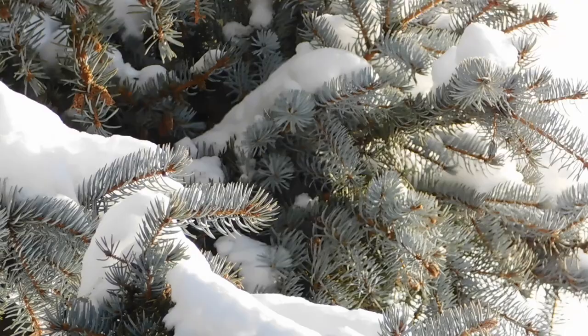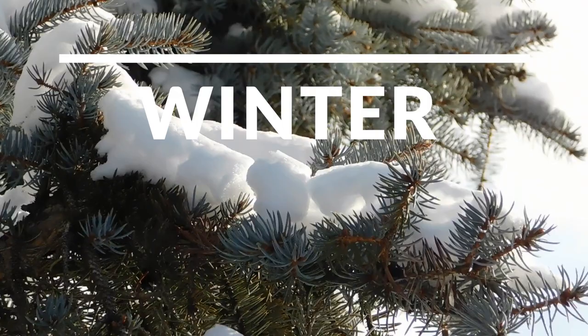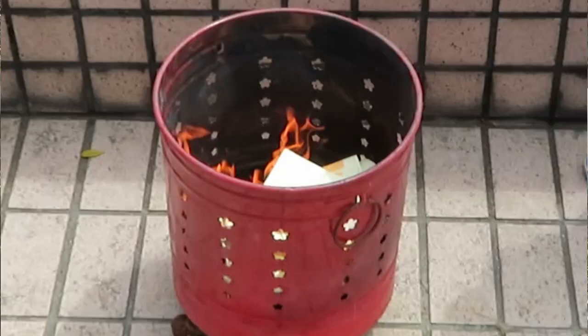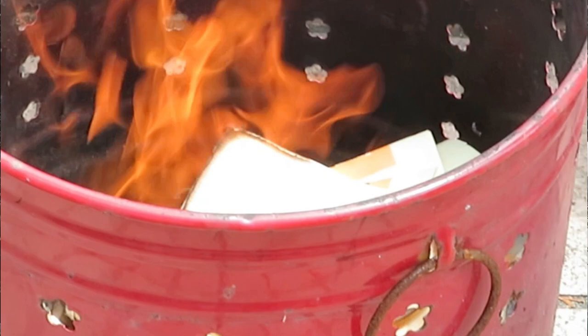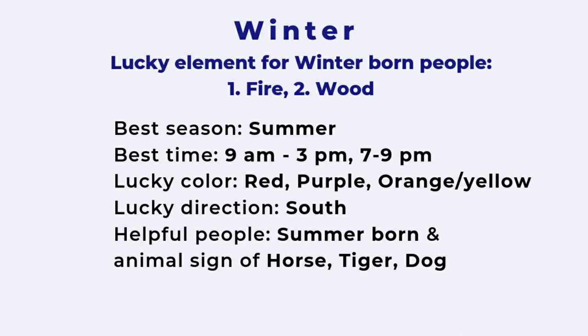The last season is winter, which has a lot of water energy and thus lacks fire — so fire is your lucky element. The lucky season for you is summer because of the fire element. Your lucky time of day is 9 am to 3 pm and also 7 to 9 pm. Your lucky colors are red, purple, and some yellow. Your lucky direction is south, because south is fire. Open the window on the south side so chi can flow in, and grow some plants in the south area because wood generates fire.